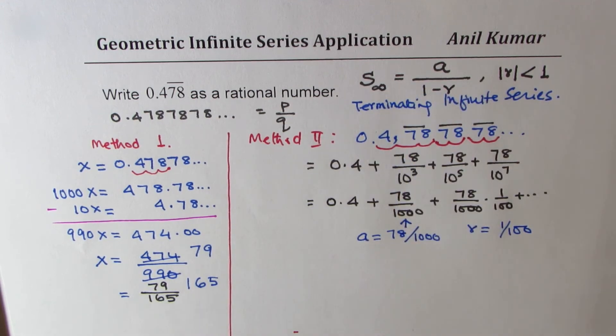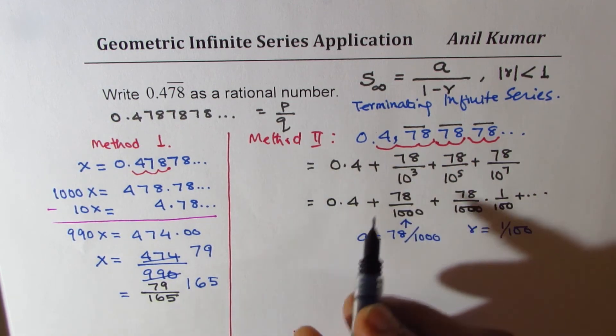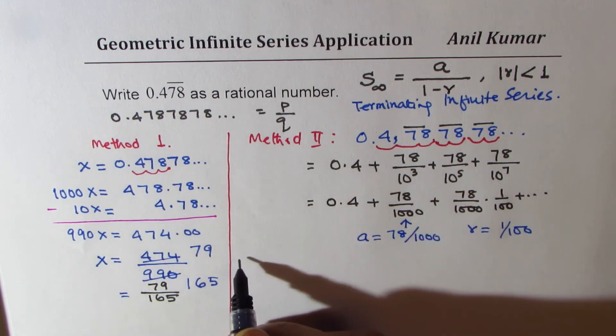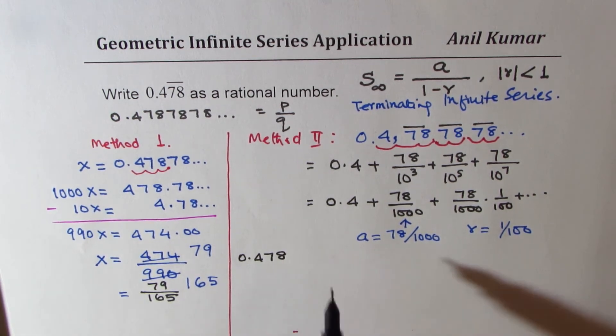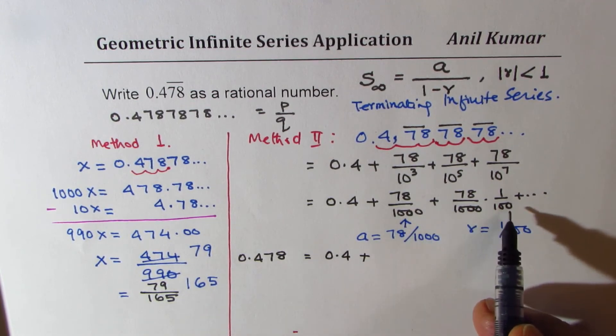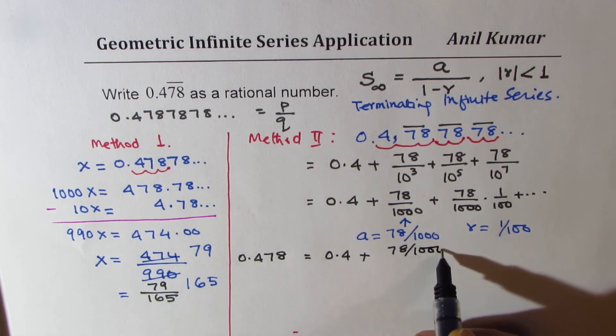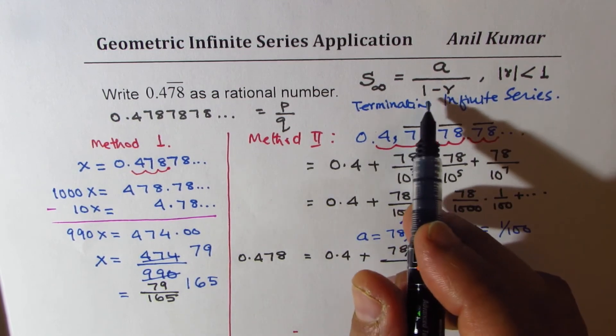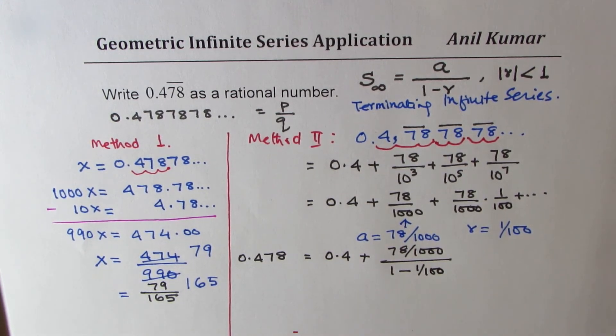We can now apply our formula and get this series. The sum of this series will be, we have to add 0.4 also. So 0.478 is actually equals to 0.4 plus sum of this infinite series, where A is 78 over 1000 in the numerator divided by 1 minus R, which is 1 over 100. Now we can use the calculator to find this answer.